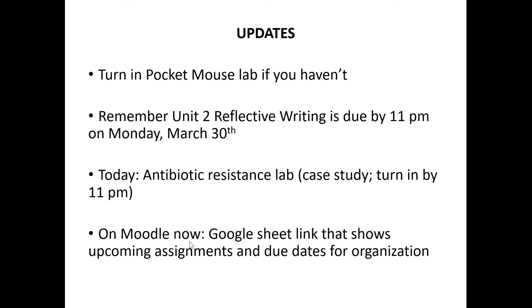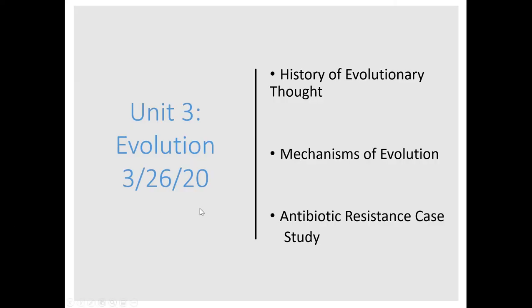Okay, so for today, for unit three, we're going to be diving into the history of evolutionary thought. Tuesday we talked about Darwin and his theories and the idea of natural selection driving evolution. Today we're going to talk about what preceded these evolutionary theories and how they came to be. We're also going to talk about some of the mechanisms and forces that drive evolution, and then on your own you're going to do the antibiotic resistance case study.